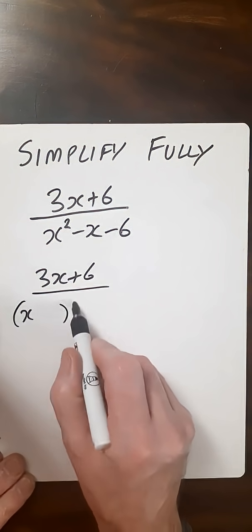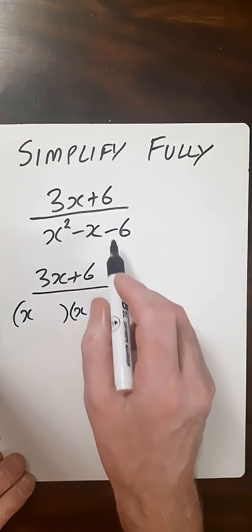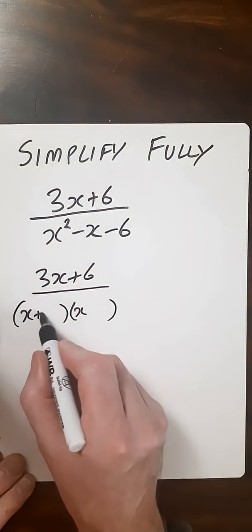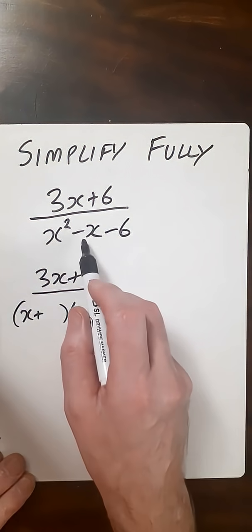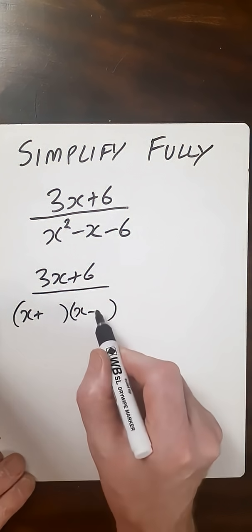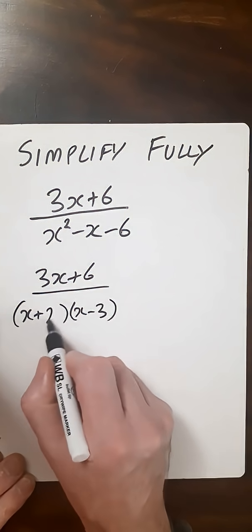We'll have an x and an x. We've got a minus sign here so there'll be a plus and a minus. If we want factors of 6 that give us minus 1, therefore we'll have x minus 3 and x plus 2.